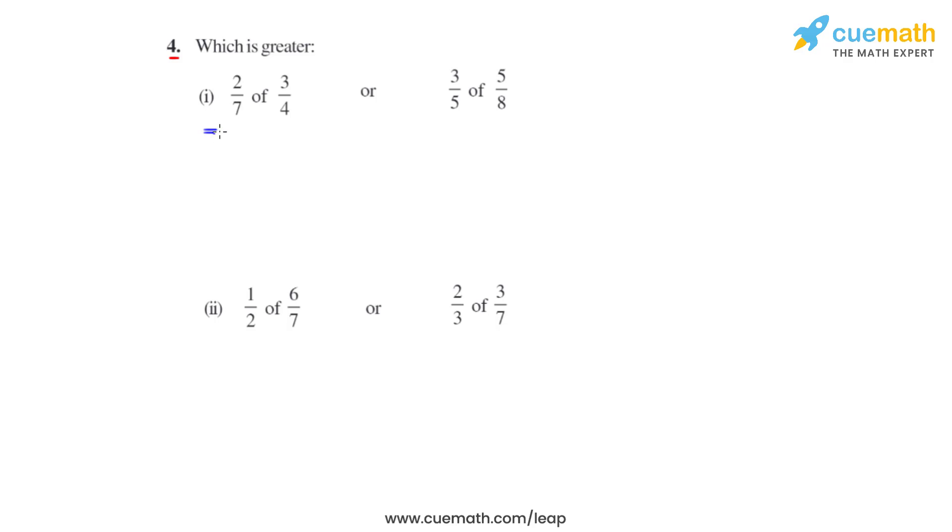To start with, we have 2 over 7 of 3 over 4. We replace 'of' with a multiplication sign. Now 2 ones are 2, 2 twos are 4. So 3 times 1 is 3 and 7 times 2 is 14, giving us 3 over 14.